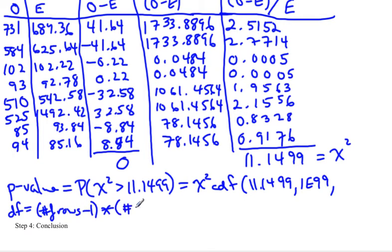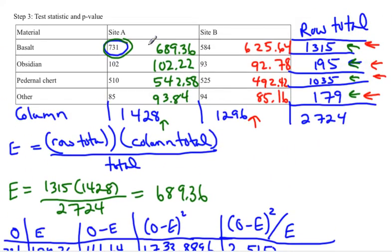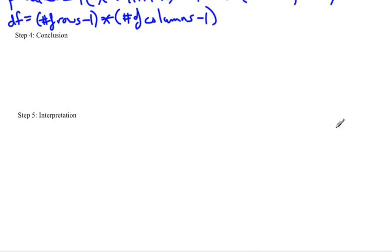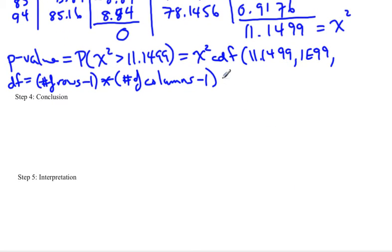Going back up to our chart here, we had originally four rows and two columns. So we would have this be 4 minus 1 times 2 minus 1. So the degrees of freedom happens to be 3. So you'd put a 3 here. You would then ask the calculator what that is or whatever technology you're using, and you get 0.0109. So there's our p-value that corresponds to this test statistic. Now we can get to our conclusion.